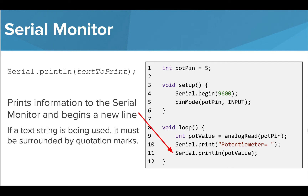The second command we can use to print text to the screen is the print line function. The only difference between this function and the print function is that this command will begin a new line in the serial monitor after printing out our text.